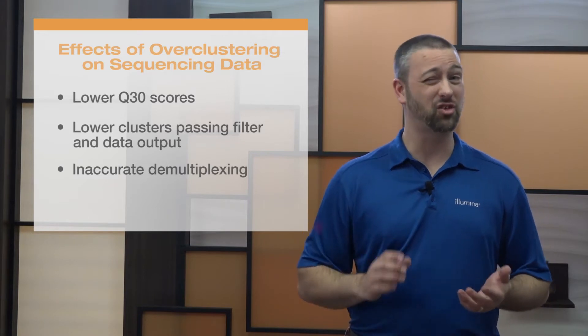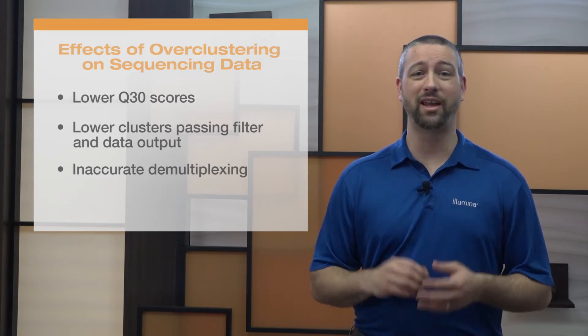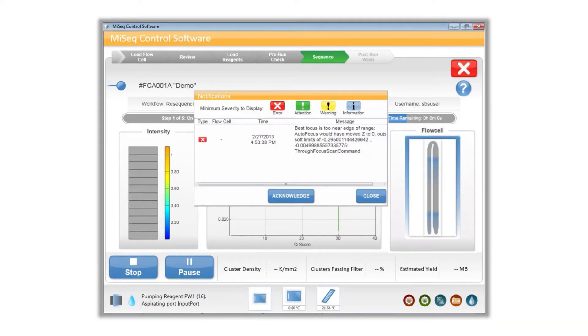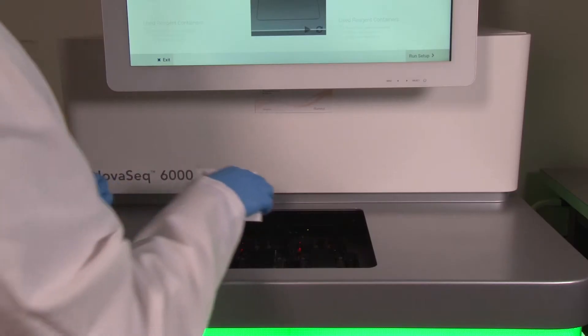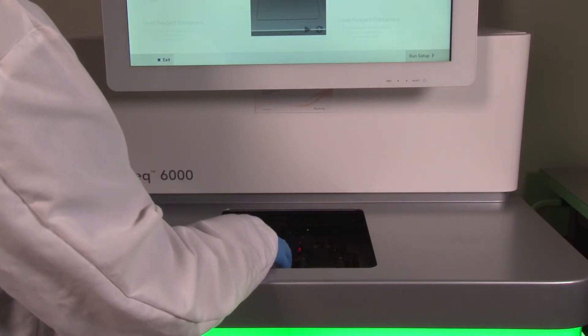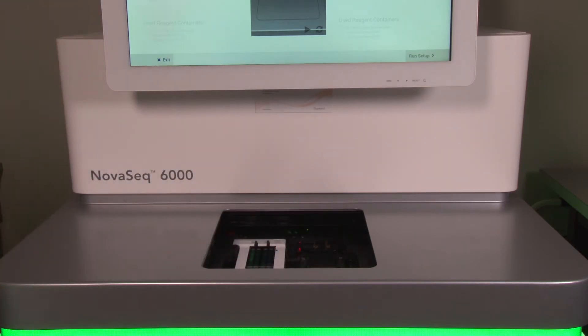Finally, when over clustering is extreme, image focusing can fail and terminate the run at any cycle, resulting in a run failure. Over clustering can have a significant impact on sequencing data. As for under clustering, these runs still maintain high data quality but lower data output. In general, under clustering is preferable to over clustering because these effects are less severe. If optimal loading concentration is unknown for a library type, it's best to load at a conservative concentration for the first sequencing run.